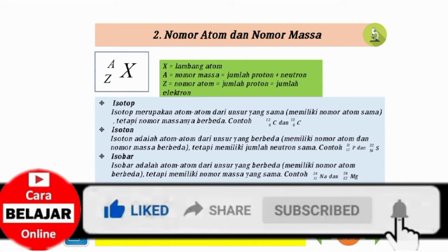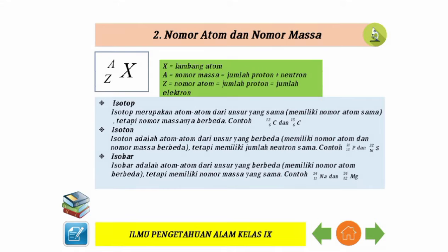Nomor atom dan nomor massa: X adalah lambang atom, A adalah nomor massa (sama dengan jumlah proton plus neutron), Z adalah nomor atom (sama dengan jumlah proton, sama dengan jumlah elektron). Isotop merupakan atom-atom dari unsur yang sama atau memiliki nomor atom sama tetapi nomor massanya berbeda. Contoh: ¹²₆C dan ¹³₆C. Isoton adalah atom-atom dari unsur yang berbeda, memiliki nomor atom dan nomor massa berbeda, tetapi memiliki jumlah neutron sama. Contoh: ³¹₁₅P dan ³²₁₆S. Isobar adalah atom-atom dari unsur yang berbeda, memiliki nomor atom berbeda, tetapi memiliki nomor massa yang sama. Contoh: ²⁴₁₁Na dan ²⁴₁₂Mg.